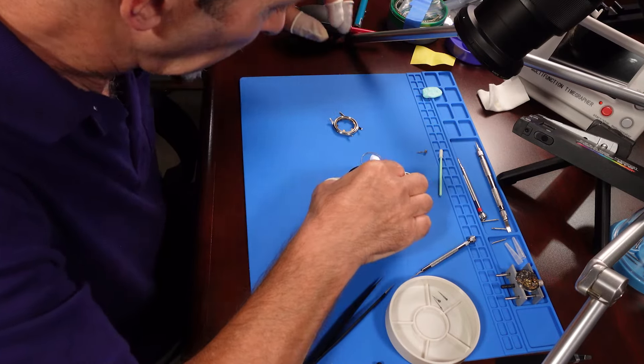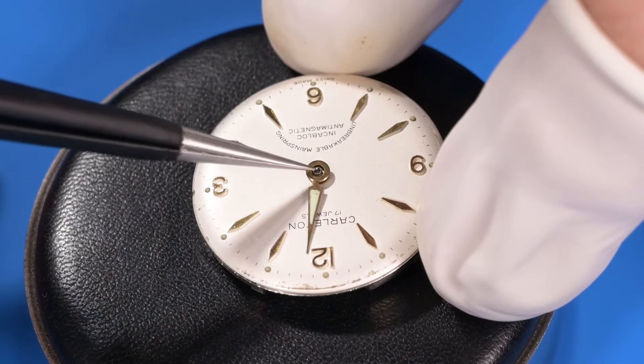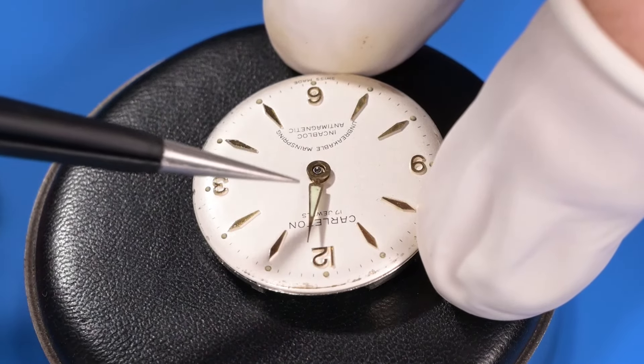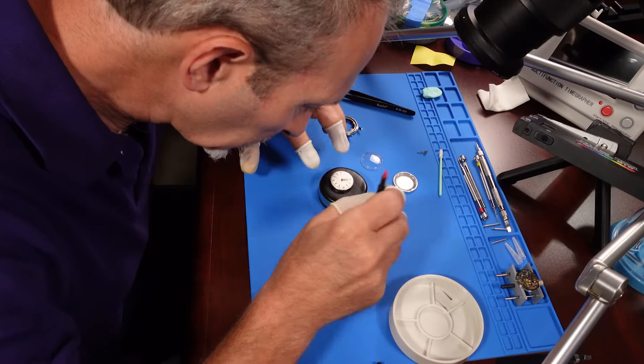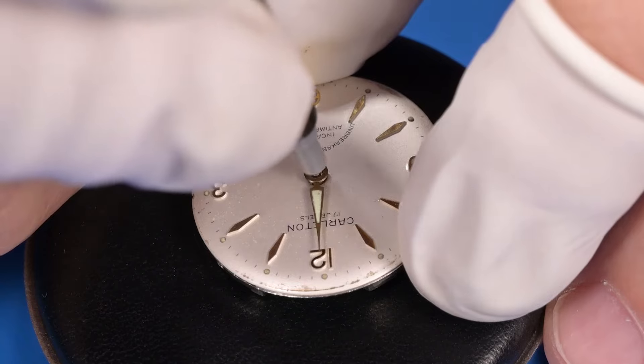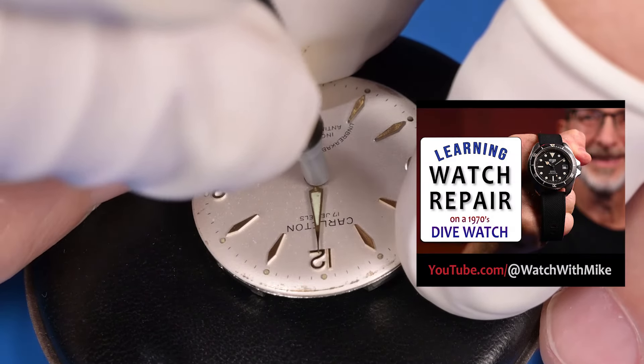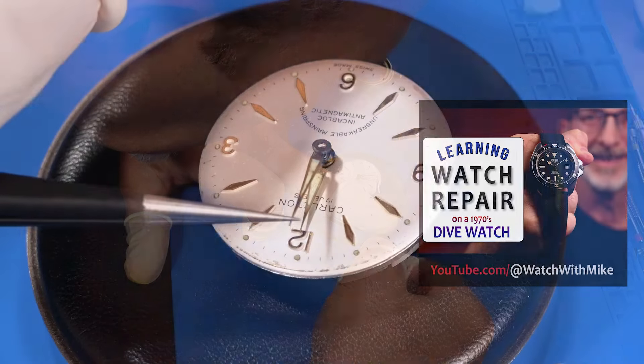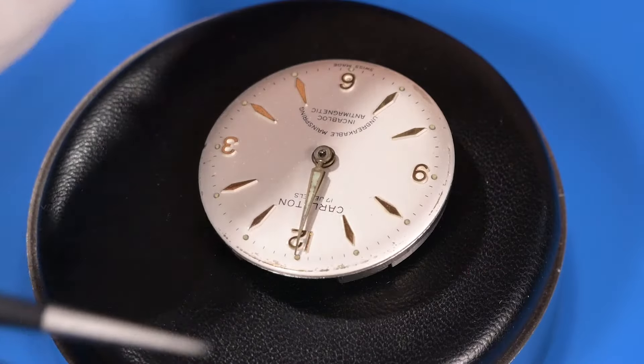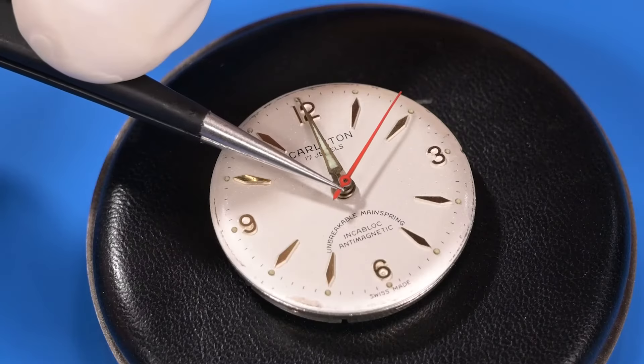So now it's time to attach the hands before putting the watch in the case. Putting hands on a three-hand watch is pretty straightforward, just pick an hour and line them all up. If you'd like to learn the extra steps of servicing a watch with a date complication, please check out my video Learning Watch Repair on a 1970s Dive Watch. Once each hand is in position, I set it in place using this hand presser tool.